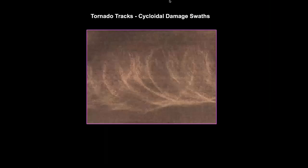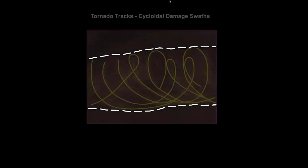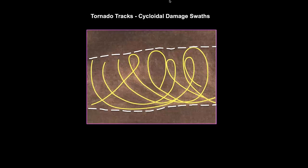Even before Fujita became involved in severe storm research, it's been well documented that in the aftermath of tornadoes we sometimes see cycloidal damage tracks. They tell you the width of the tornado core, shown with the dashed white lines, and also the tornado movement direction if you know the rotation direction. I can tell you right now that this cyclonically rotating tornado is moving left to right even if you never saw the tornado. I often tell people this is no different than the kid's game spirograph — they're actually called trochoidal marks, but I'll just call them cycloidal marks.